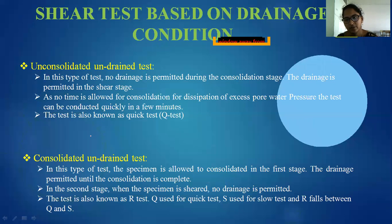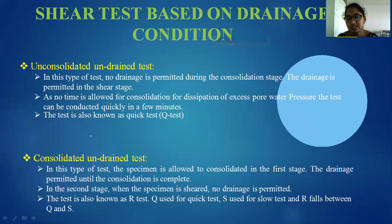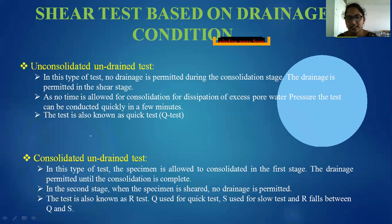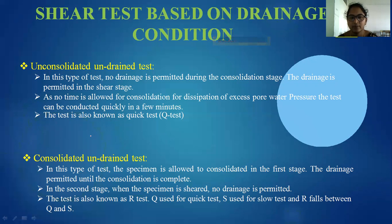These drainage conditions are applicable in the triaxial test, which is also conducted in the geotechnical engineering lab. In the unconsolidated undrained condition, no drainage is permitted through the consolidation stage, but drainage is permitted in the shear stage. This test is a quick test — no time is allowed for consolidation, since consolidation is a long process while compaction is a short process. No time is allowed for dissipation of excess pore water pressure, so the test can be conducted quickly in a few minutes. Expulsion of air voids from the soil is called compaction, and expulsion of water from the soil is called consolidation.